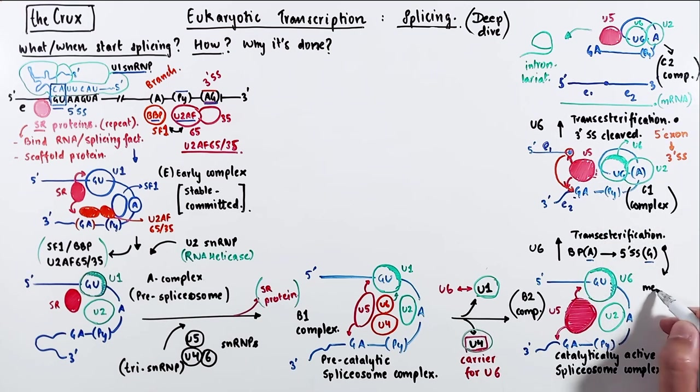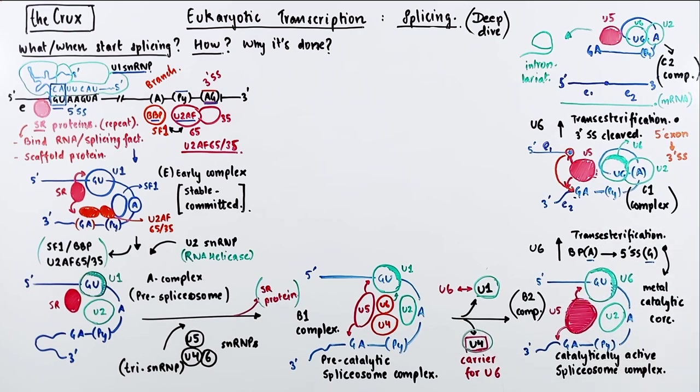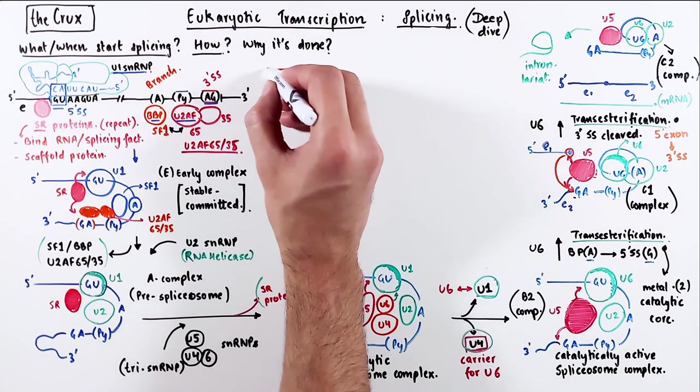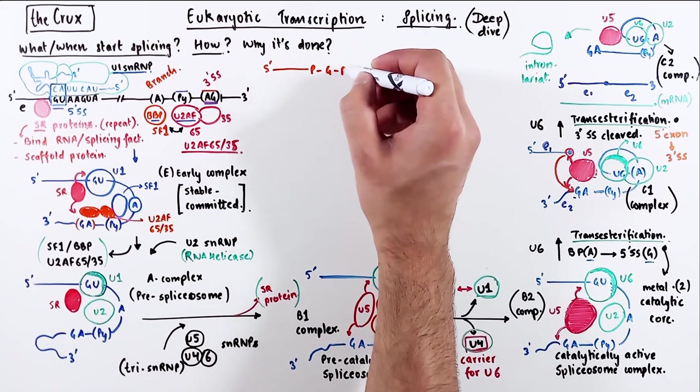The 2 transesterification steps are catalyzed by U6 snRNP, which has a catalytic core that contains 2 metals. So we said that there are these 2 transesterification steps,